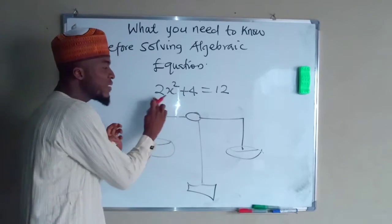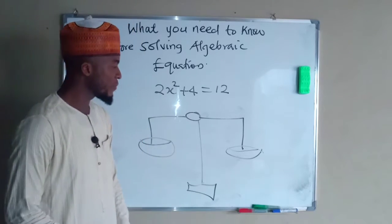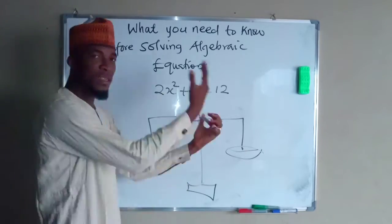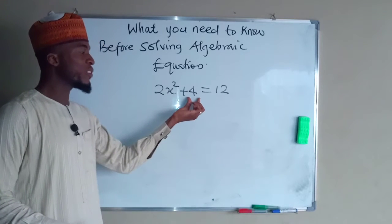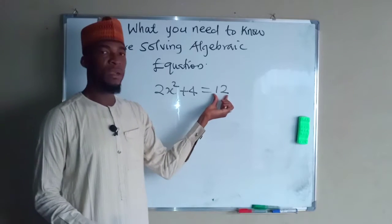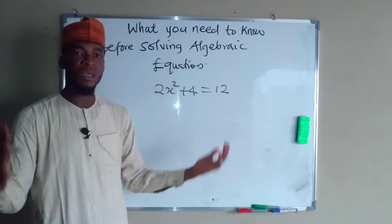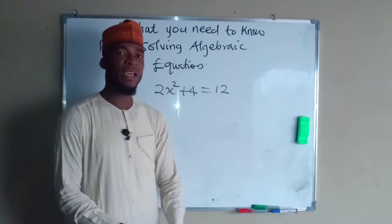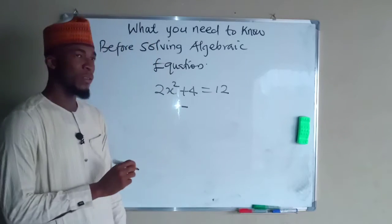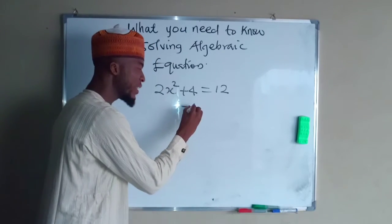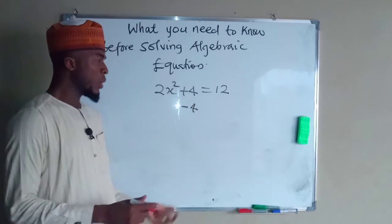The equality sign means the whole expression is equal to 12, and we need to find the unknown variable. We have an unknown x with its coefficient, a positive real number 2, and a positive real number 12. These are like terms, so we connect them together. The opposite of positive 4 is negative 4, and it is negative 4 that will neutralize positive 4.